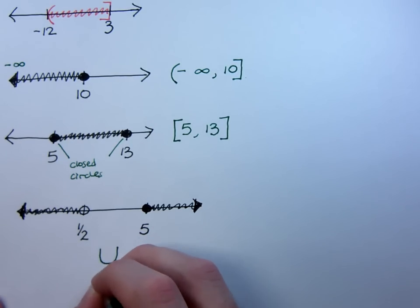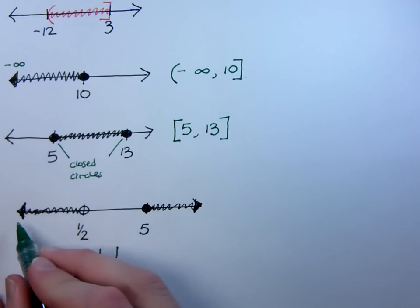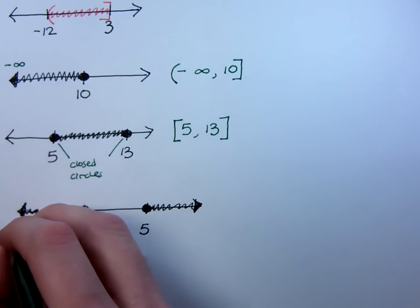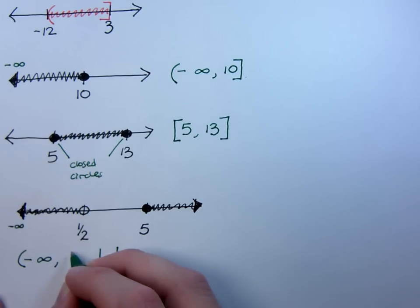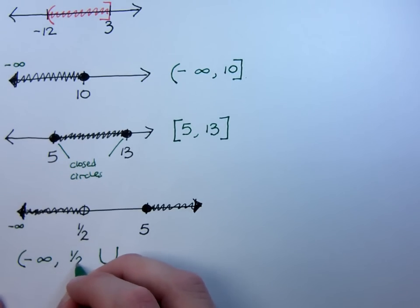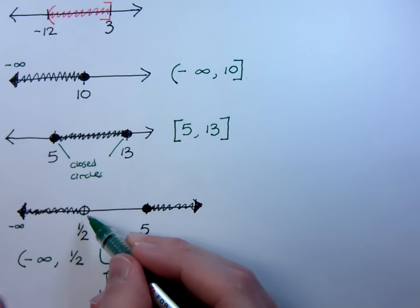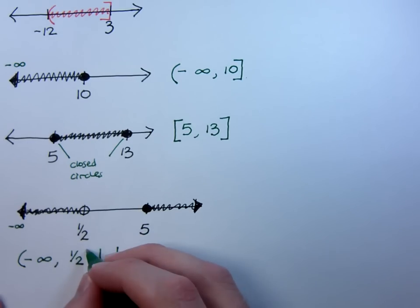We're going to use this symbol right here, and this symbol means a union. We're going to talk more about that in just a little bit. So if I take this first part over here, understanding coming from negative infinity, I would write this as parentheses negative infinity to 1 half. Since I have an open circle, I know that I'm going to use parentheses here because I'm not including 1 half.